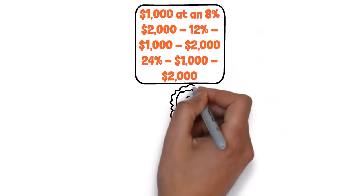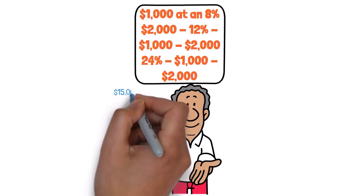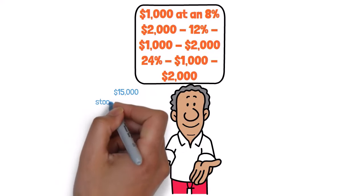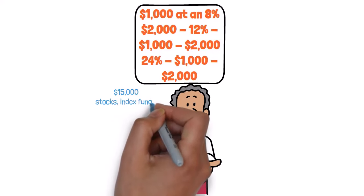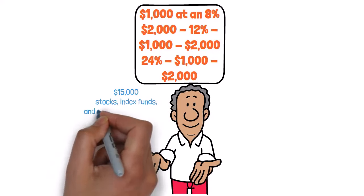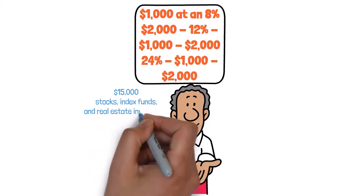To understand it better, let's consider another example. Meet John. He's got $15,000 burning a hole in his bank account, but he knows he's not getting the best returns there. So he decides to spread his money evenly across 3 assets: stocks, index funds, and real estate investment trusts.